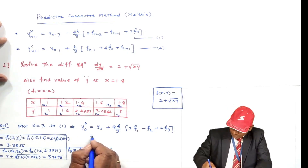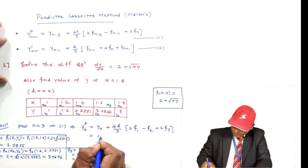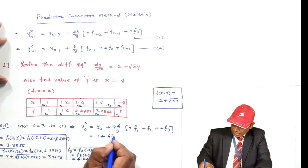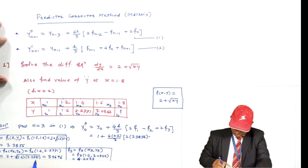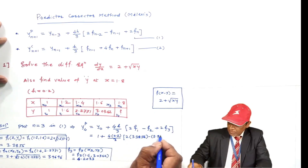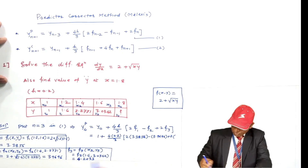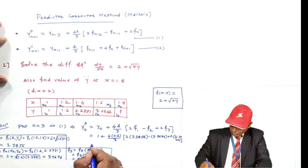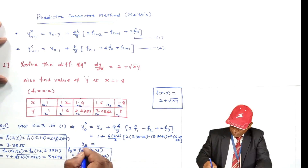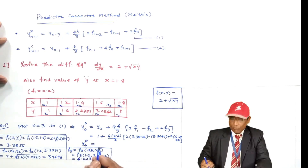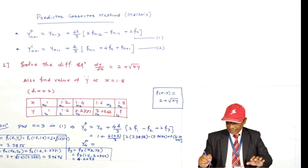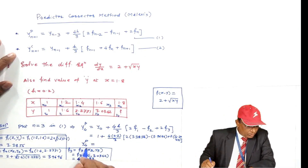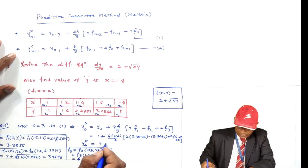Putting all values into the predictor formula: Y0 = 1, h = 0.2, F1 = 3.3856, F2 = 3.9696, F3 = 4.2033. Y4P = Y0 + (4h/3)[2F1 − F2 + 2F3] = 1 + (4×0.2/3)[2(3.3856) − 3.9696 + 2(4.2033)]. The predicted value of Y at x = 1.8 is Y4P = 3.9852.